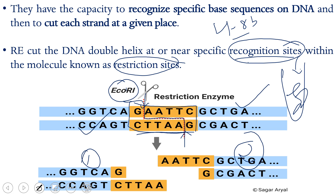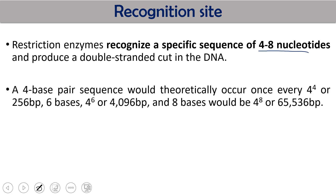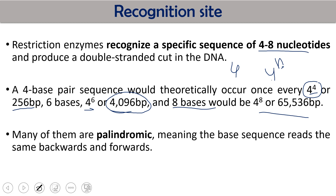Recognition site and restriction site are different things — sometimes both are at the same place, and sometimes the restriction site is outside the recognition site. Restriction enzymes recognize a specific sequence of four to eight nucleotides long and produce a double-strand cut. If the recognition site is four nucleotides long, the probability is it will be repeated every 4⁴ = 256 base pairs. If six base pairs long, it repeats every 4⁶ = 4096 base pairs; if eight base pairs, even less frequently.